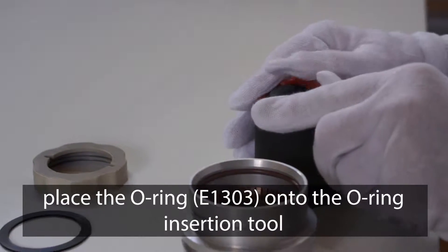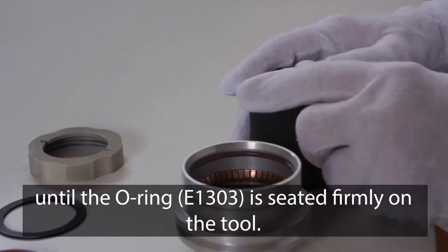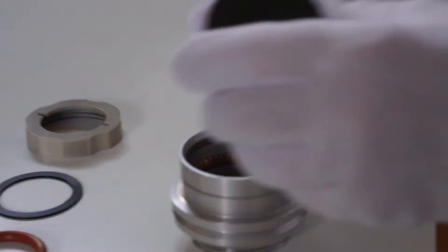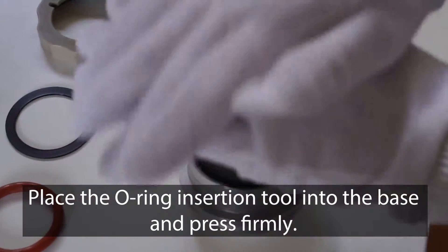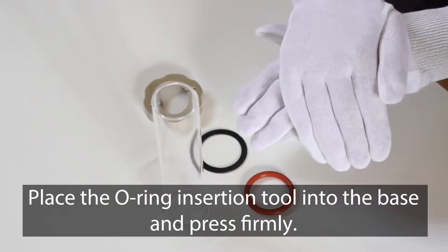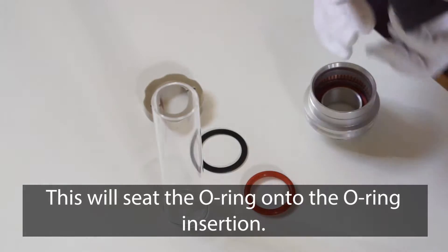Place the o-ring onto the o-ring insertion tool until the o-ring is seated firmly on the tool. Place the o-ring insertion tool into the base and press firmly. This will seat the o-ring onto the o-ring insertion.